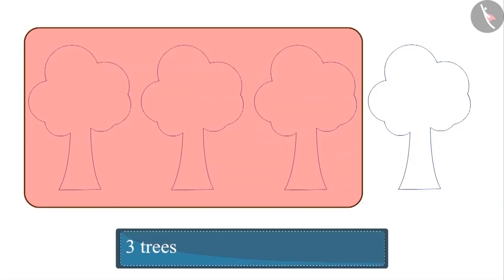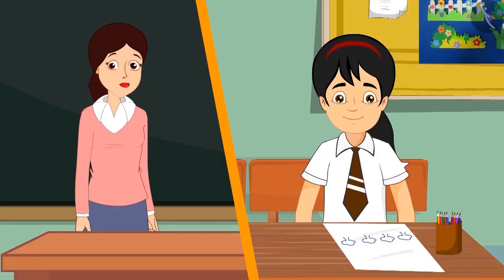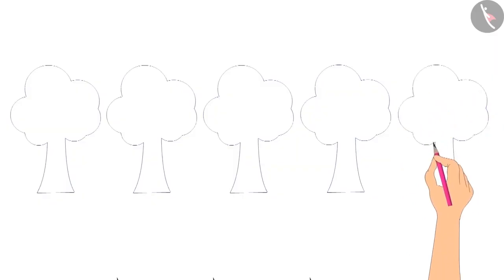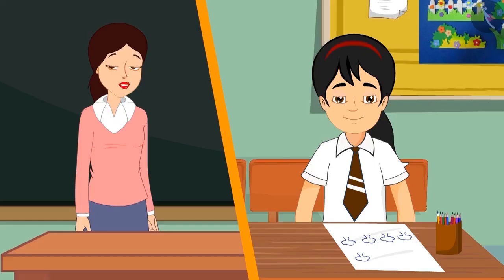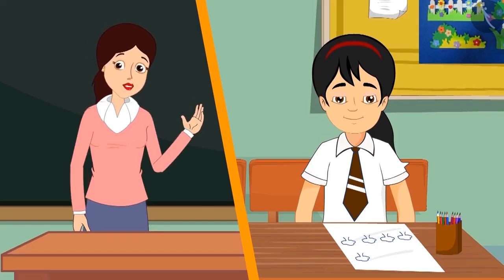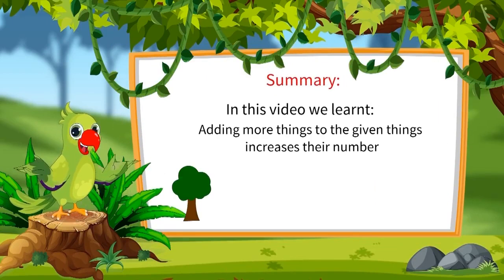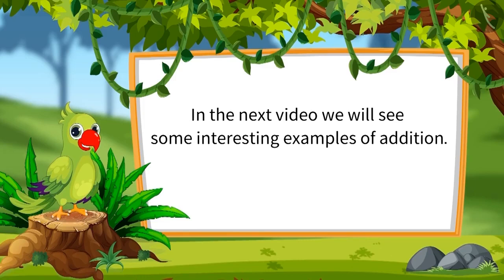Suppose I draw one more tree along with these three trees — how many trees will there be? Three trees and one more tree, so in total there are four trees. And if I make one more tree along with these four trees? Four trees and one more tree, then in total there are five trees. Very good, Pinky! So children, you can also add things like Pinky and tell their total number. In this video we learned that adding more things to the given things increases their number.